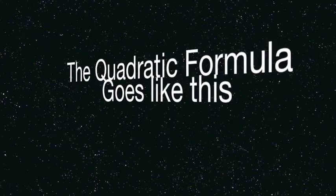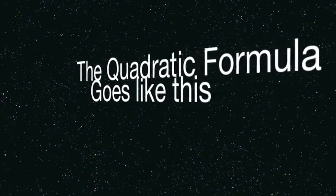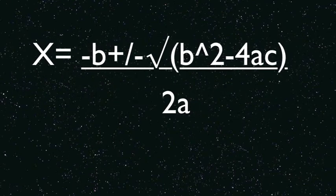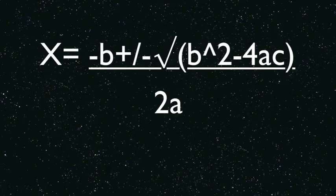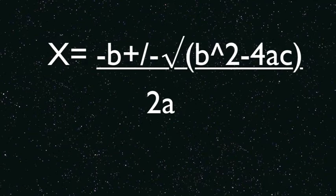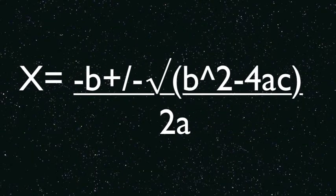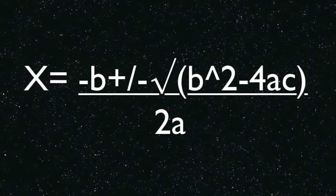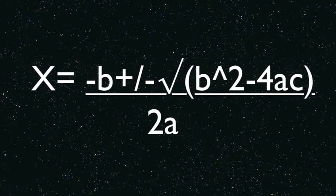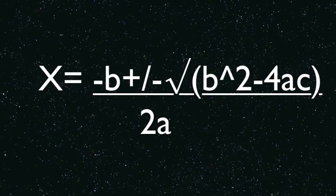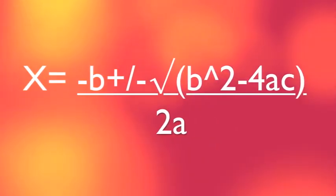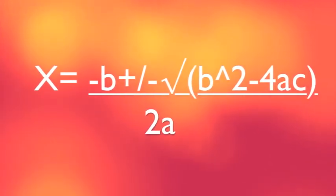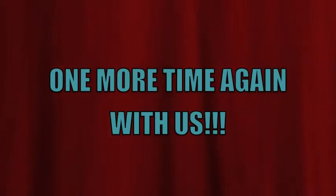The quadratic formula goes like this: x equals negative b plus or minus square root of b squared minus 4ac, all over 2a. One more time with us everybody! x equals negative b plus square root of b squared minus 4ac, all over 2a. One more time!